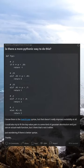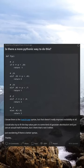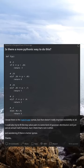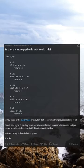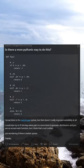I know there is the match case syntax but that doesn't really improve readability at all. I could also try to fit the key value pairs to some kind of gaussian distribution and just use an actual math function but I think that's not it either.